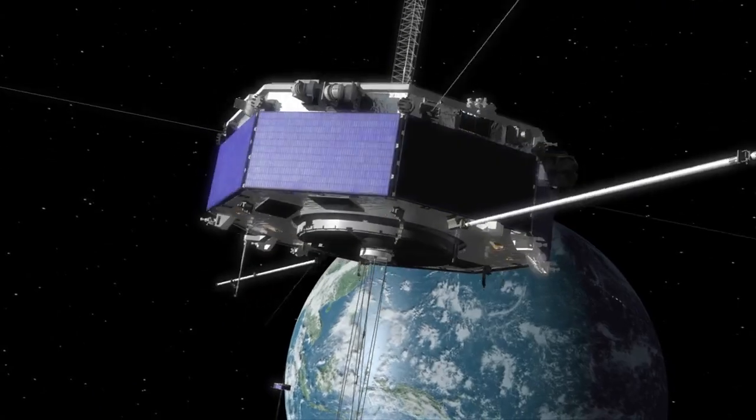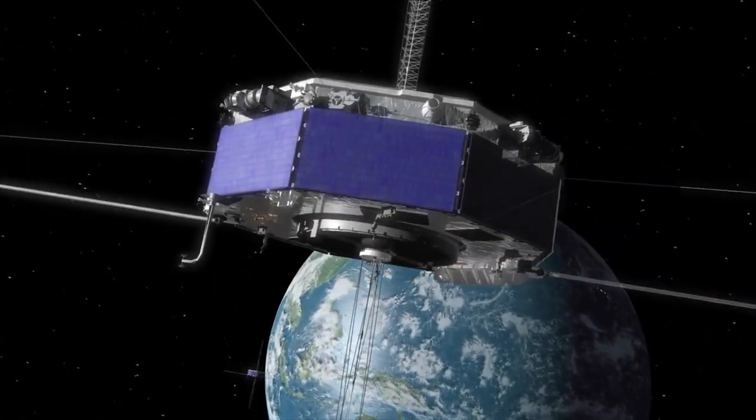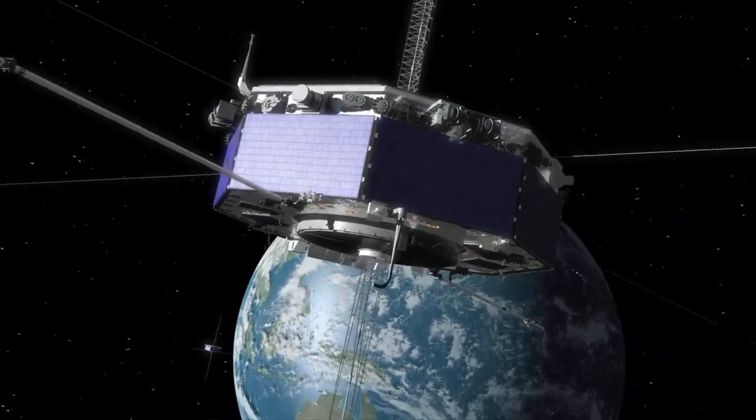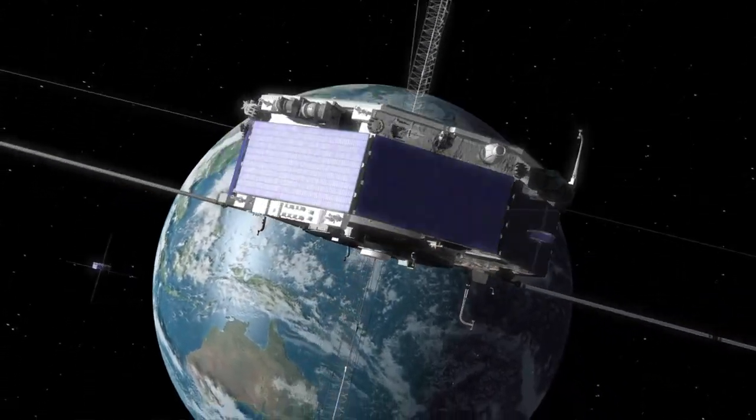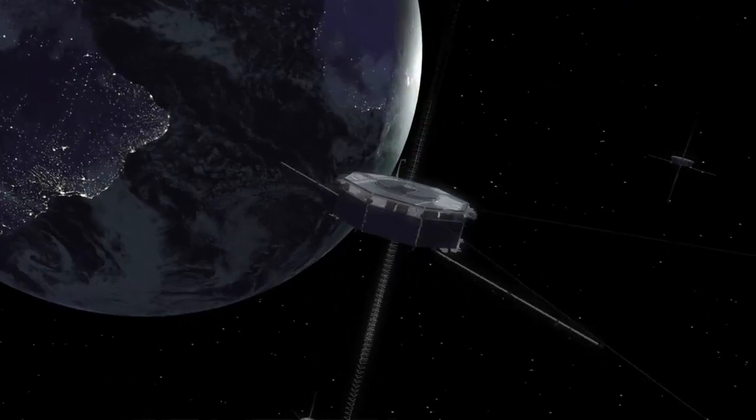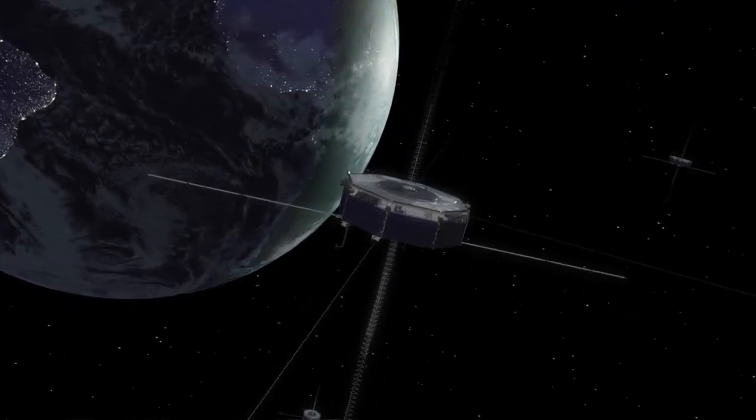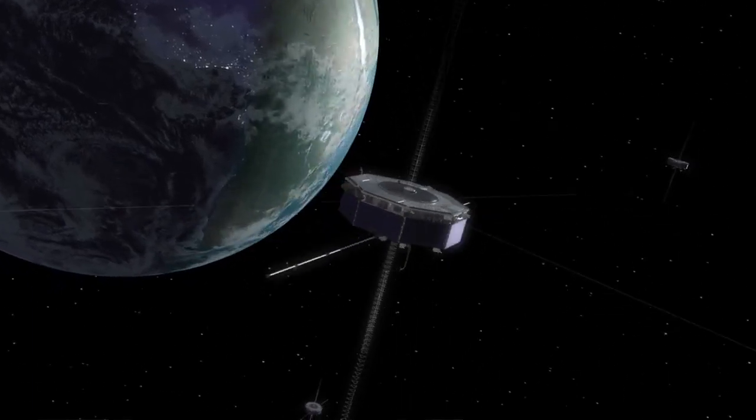The instruments that are actually going to be measuring the particles in space are collecting them much more rapidly, at a much higher cadence than they have on previous missions - about a factor of a hundred. Whereas it would take a previous generation particle instrument about three or four seconds to build up a whole picture of the sky, it's going to take MMS about 30 milliseconds. So it's really sort of game-changing technology.